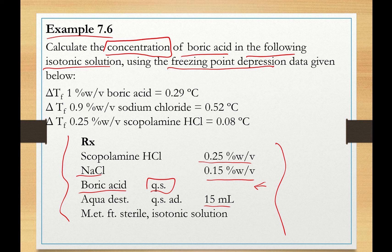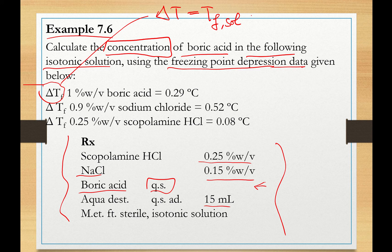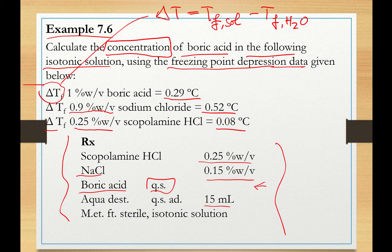We have the following freezing point depression data. The delta Tf — the difference between the freezing point of the solution and the freezing point of pure water — for 1% boric acid is 0.29°C. The delta Tf for 0.9% w/v sodium chloride is 0.52°C, meaning 0.9% NaCl freezes at negative 0.52°C. And the delta Tf for 0.25% w/v scopolamine hydrochloride is 0.08°C.